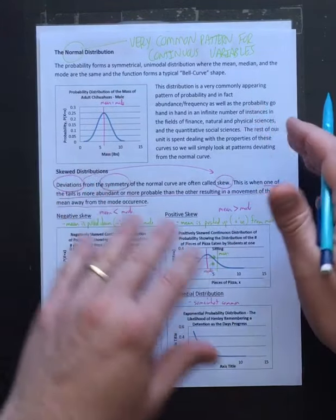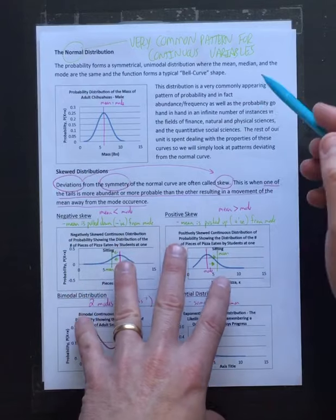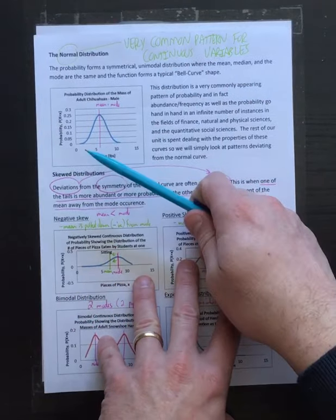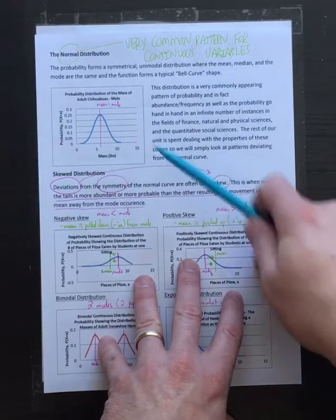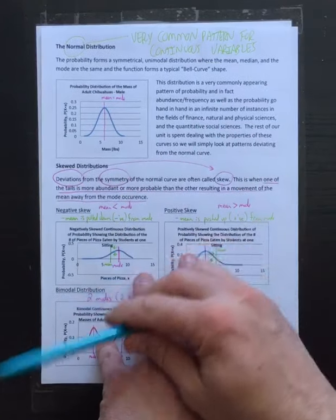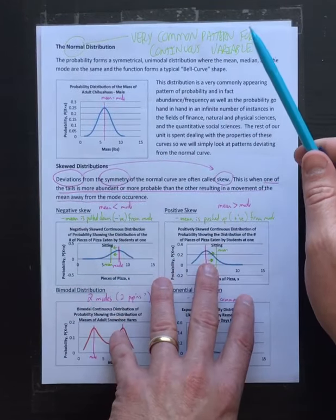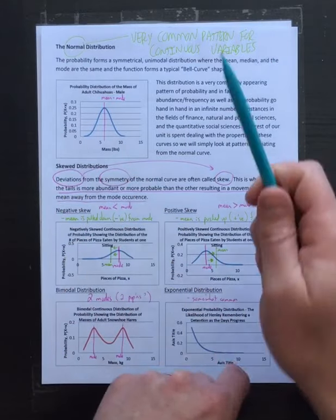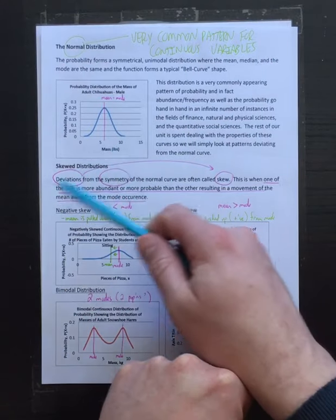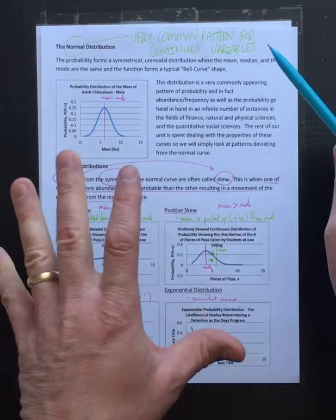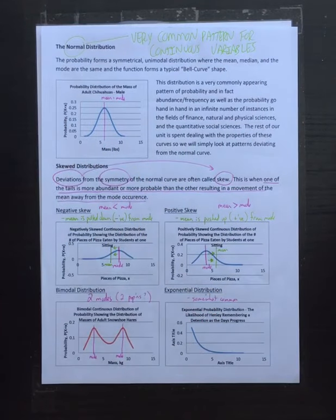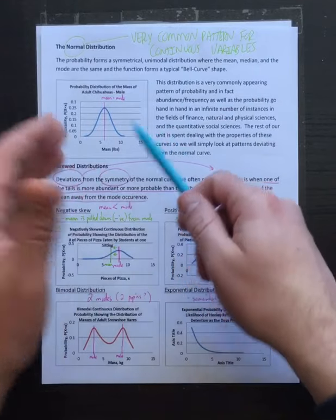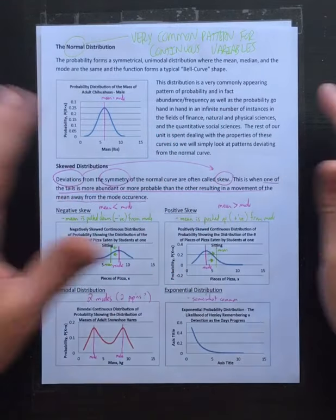We're going to focus on the normal distribution for the rest of this unit because it's so common. The binomial distribution for a large enough sample size looks exactly like it, even though it's discrete - the pattern of bars looks the same. The binomial is for discrete variables and this is for continuous variables, but they look exactly the same.